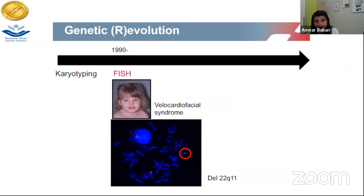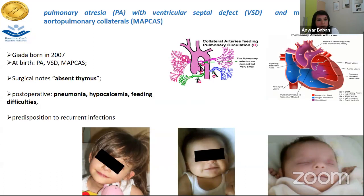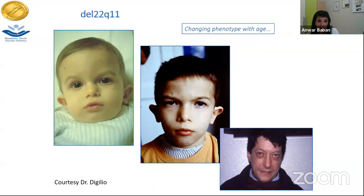I'd like to tell you about our friend Jada, born in 2007, affected by pulmonary atresia, ventricular septal defect, collaterals (MAPCAs), with the surgeon noting absent thymus. Post-operative complications were pneumonia, hypocalcemia, and feeding difficulties. This scenario gets repeated with patients with microdeletion 22q11. It's also important to remember that the phenotype changes — when we see young infants, the phenotype is really different from what we see in adults.